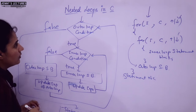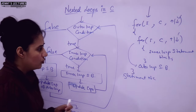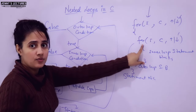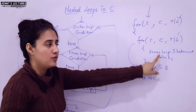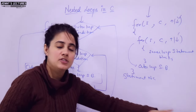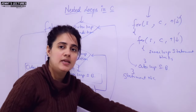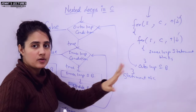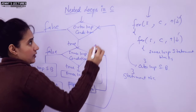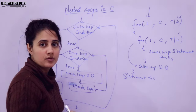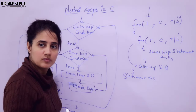Now some more important points about nesting of loops. First: nesting can be up to many levels — a for within a for, within that another for, and so on — as many levels as per your requirement. Second: it is not like you can only nest the same type of loop. You can do nesting of different loops also — like within a for loop you can write a while loop, and within that while loop you can write a do-while loop.